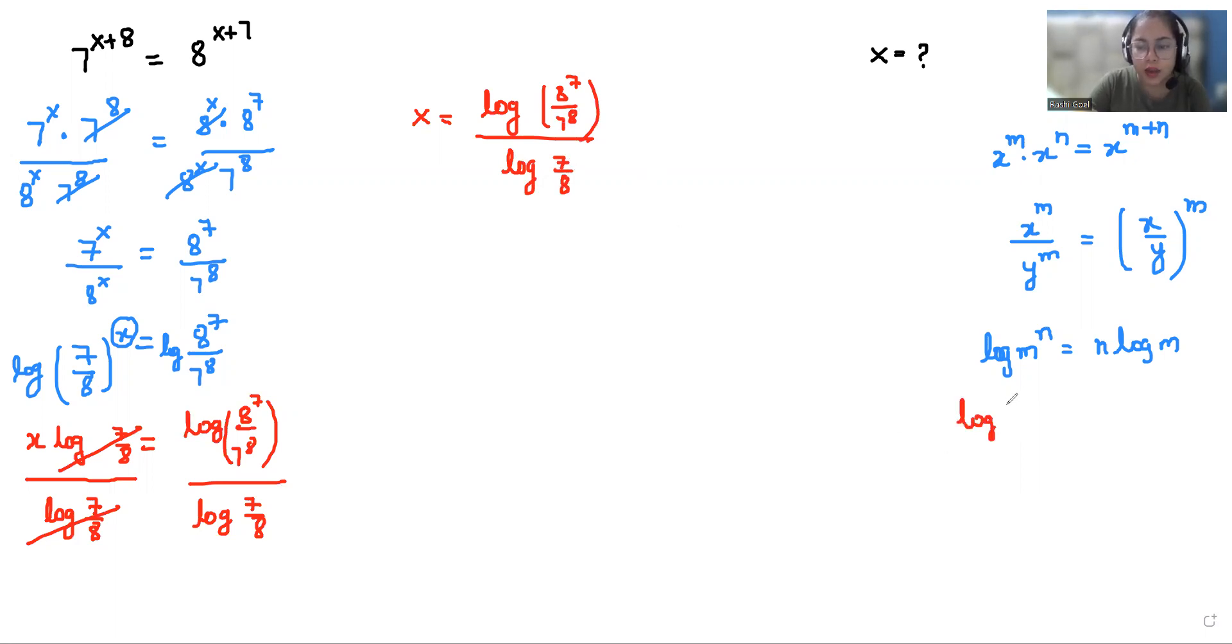The formula of log(A/B) equals log(A) minus log(B). So we can apply the formula to numerator as well as denominator. So our numerator becomes log(8^7) minus log(7^8) divided by log(7) minus log(8).